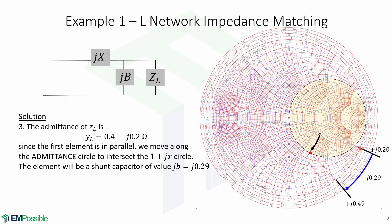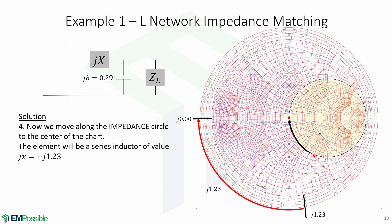We look at the impedance here and at the impedance at the intersection. This means that the first element will be a shunt capacitor of value +j0.29. Now the second element is in series, so we're going to move along the impedance circle — along the 1 + jx circle — to the center of the chart. In this case, we move from here to here, and in impedance values we move from −j1.23 all the way to j0. Since we are moving upwards in impedance, the element will be a series inductor of value j1.23.